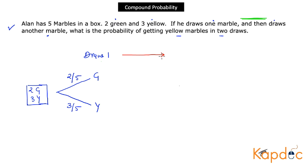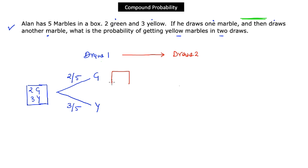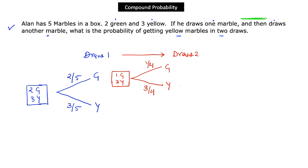The outcome of the second draw depends on the outcome of the first draw. If a green was picked first, one green is removed, leaving one green and three yellow — four total. The probability of green on the second draw is then 1 over 4, and the probability of yellow is 3 over 4.